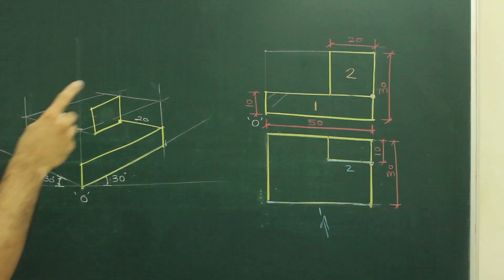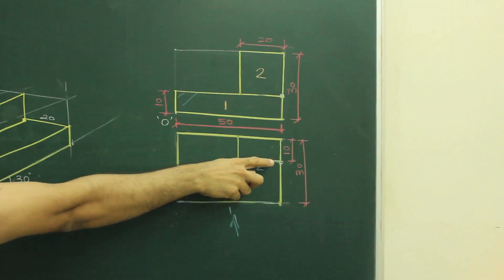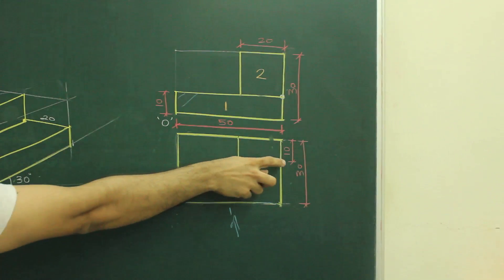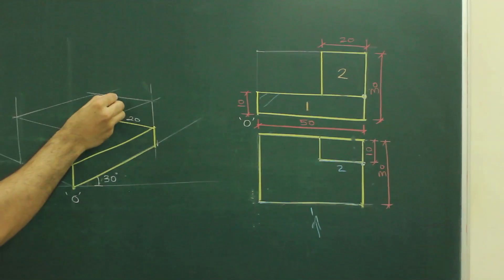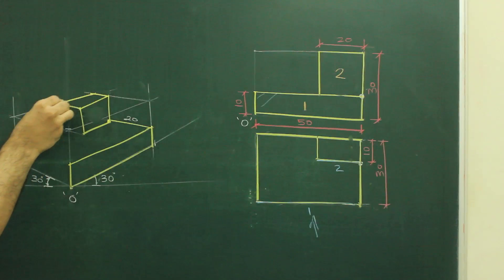Now if you see part 2 in top view, they are going with 10. See it is 10 behind, 10 behind. So what I can do in main diagram, I will go 10, 10 behind and I will join this.